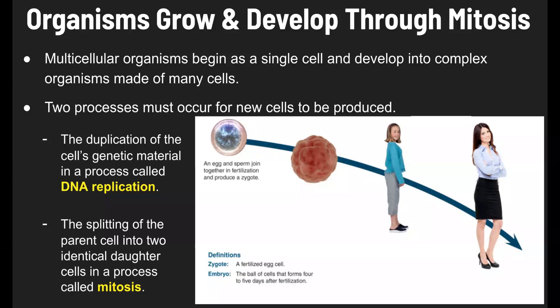When an egg and a sperm join together in the process called fertilization, they produce a zygote. A zygote is just a fertilized egg — we have one zygote here, a single cell, just formed by the fertilization of an egg cell with a sperm cell.